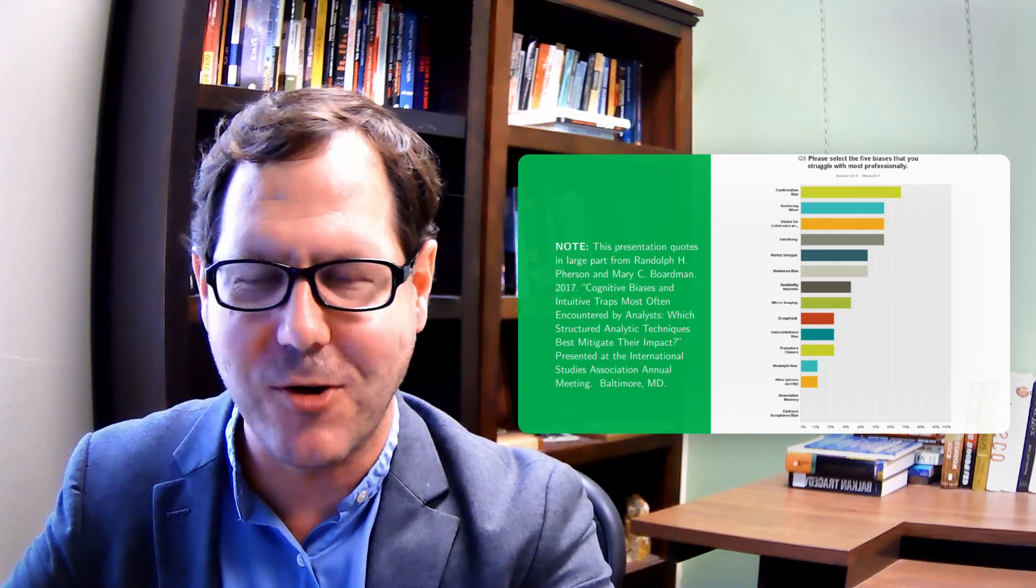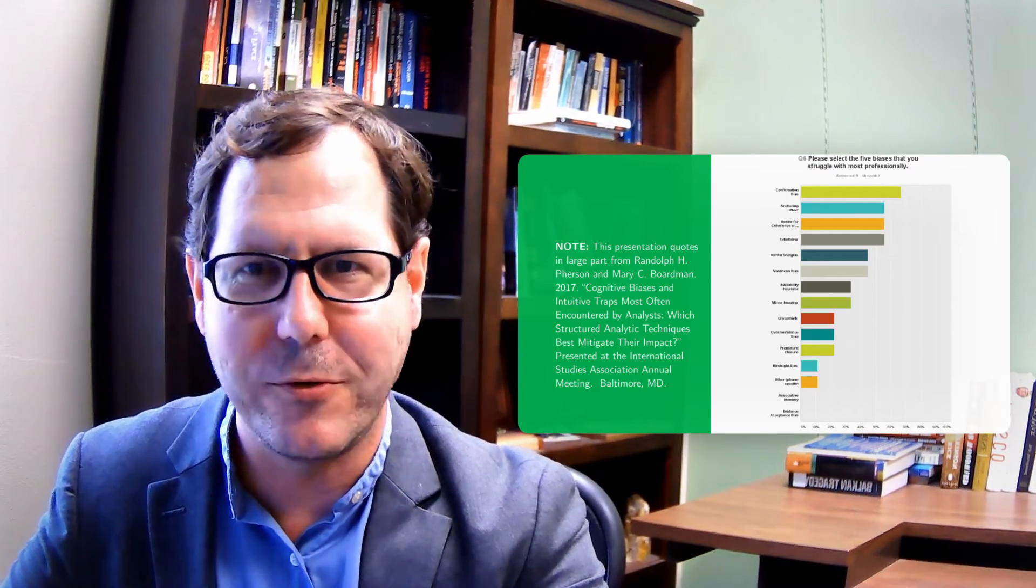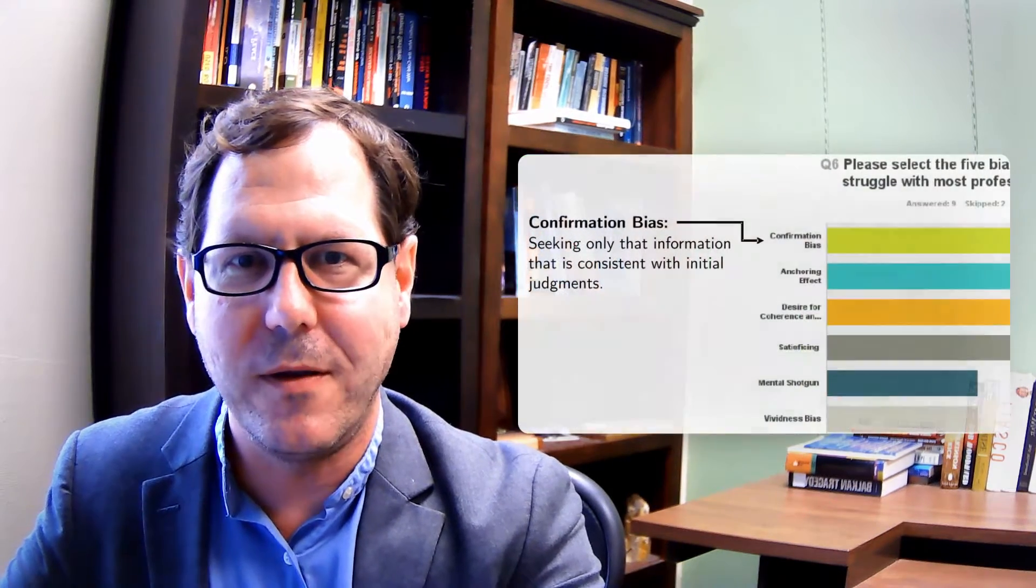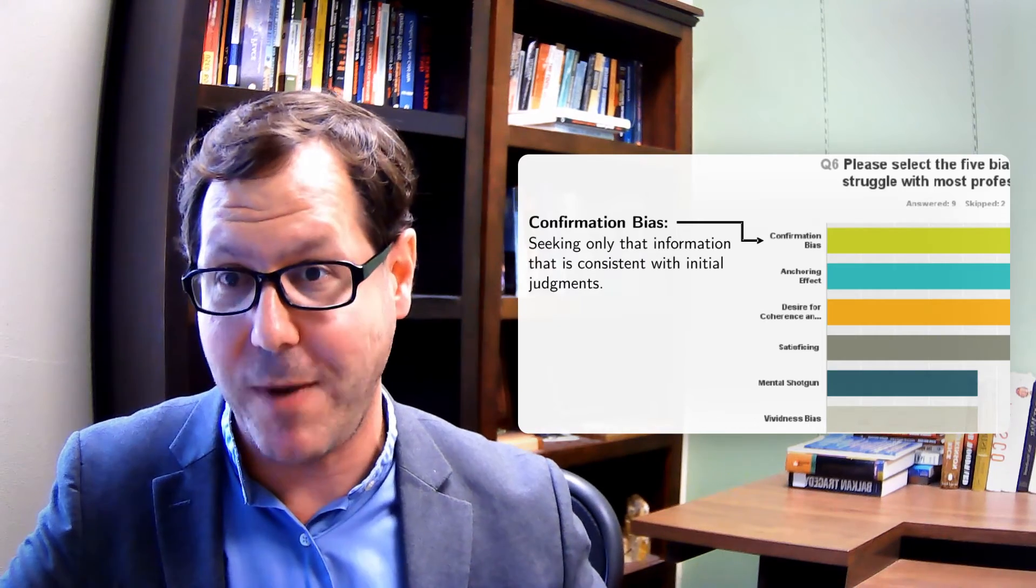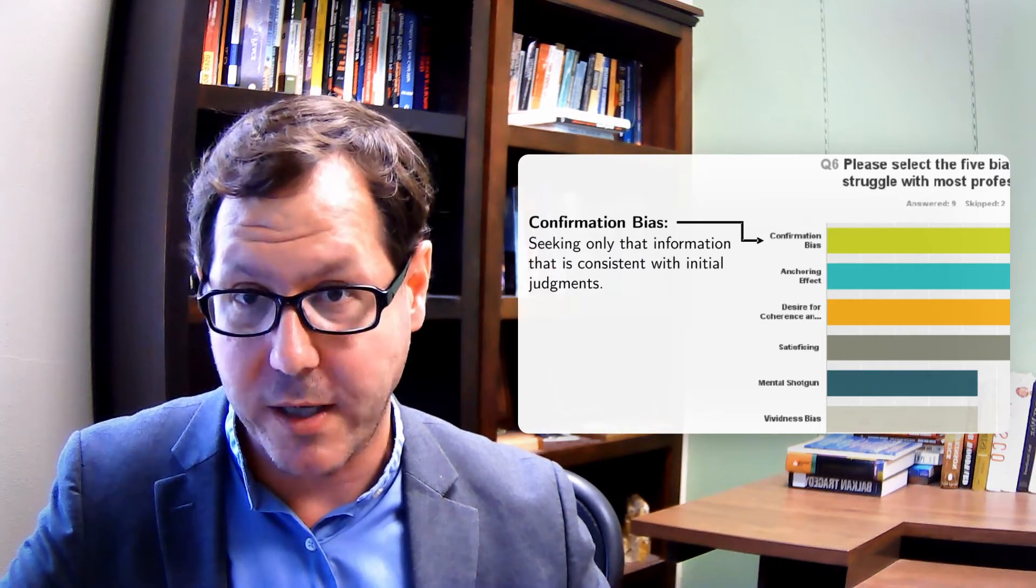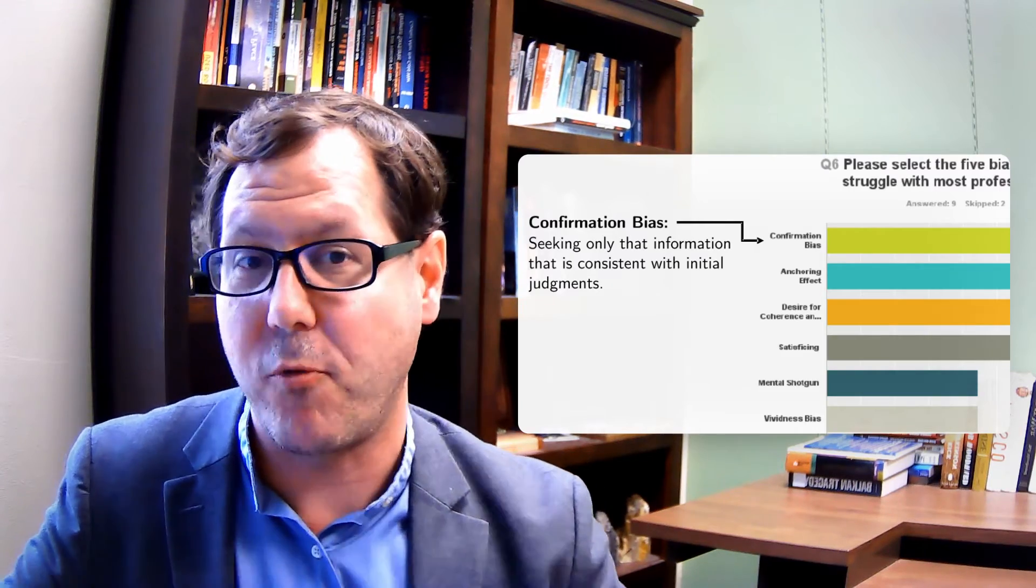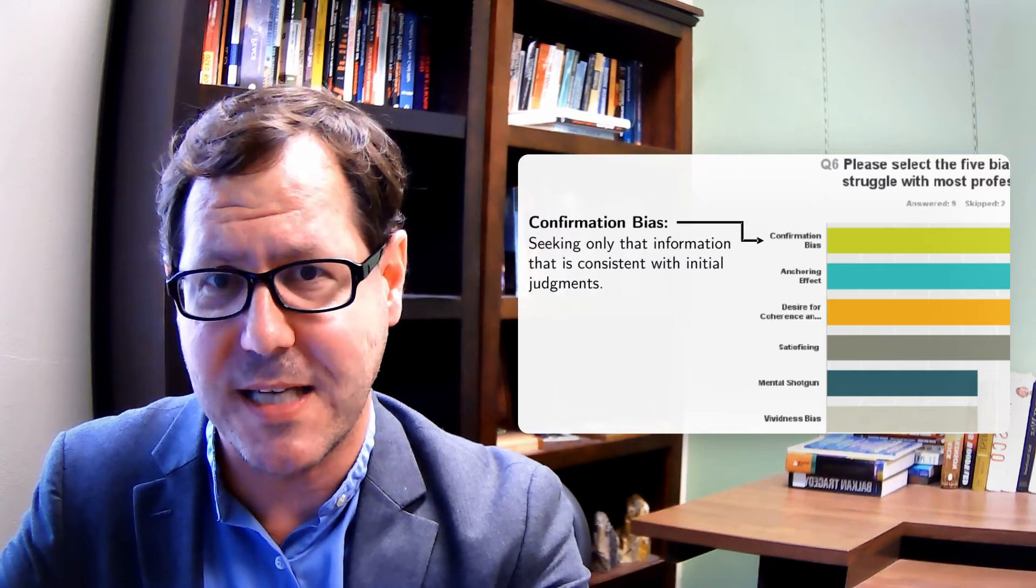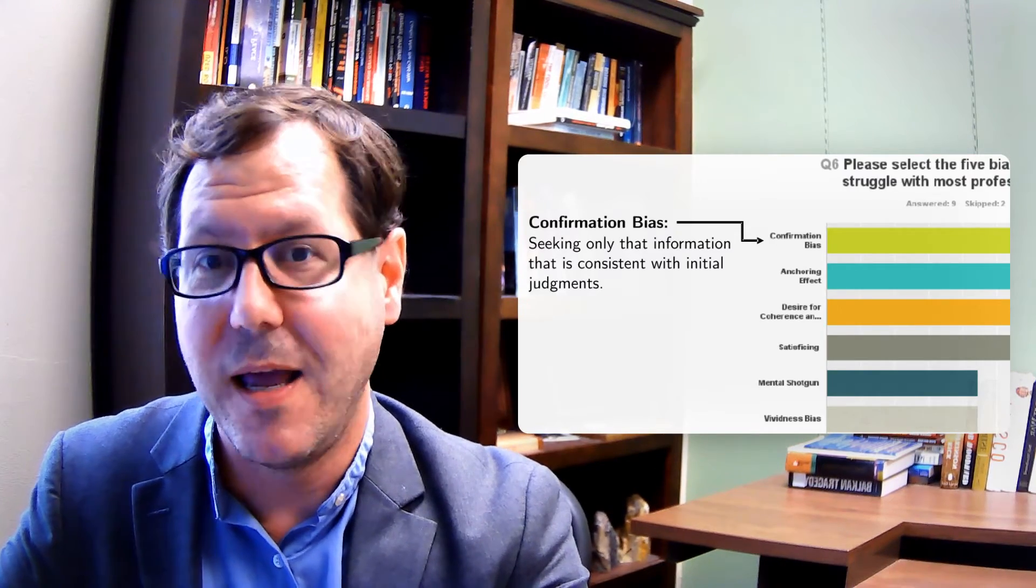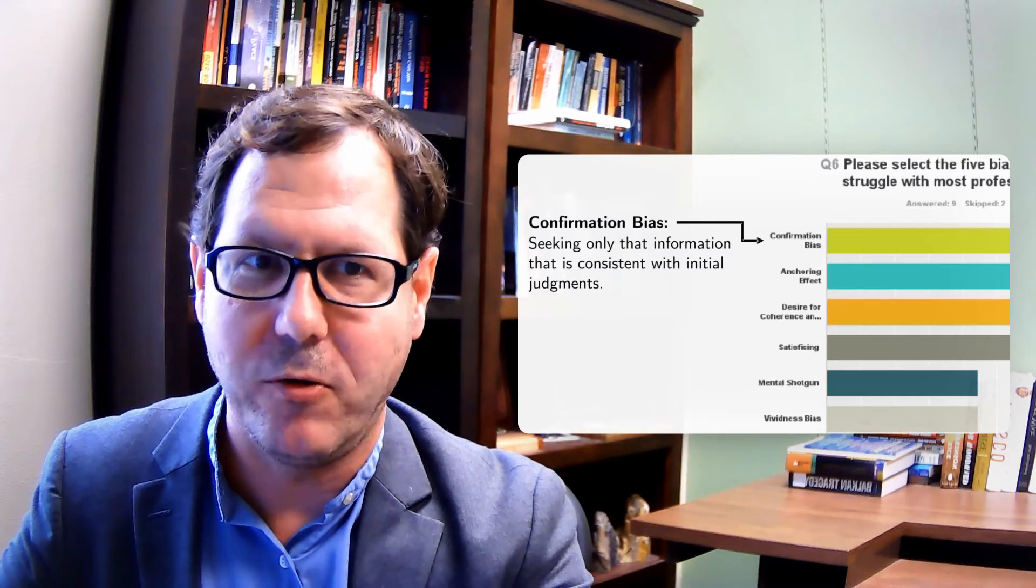I'd like to run through those 10 and then talk about structured analytic techniques and how they might help counter some of that. The first is confirmation bias - the idea that you're seeking out information that tells you what you think you already know, pushing back against information that doesn't fit with your pre-existing worldview. It's not surprising that was the number one bias analysts struggled with.